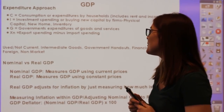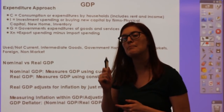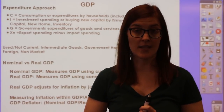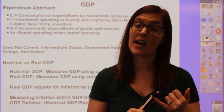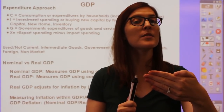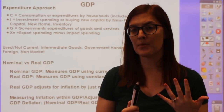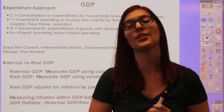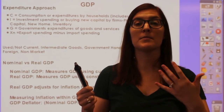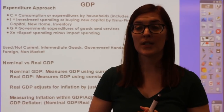G is government. To count in GDP, the government has to be receiving a good or service in return—which means all government handouts do not count. These are also called entitlement programs or transfer payments. Welfare, Social Security, and unemployment compensation are examples of the government giving out money without receiving a good or service in return. What would count is buying a tank or paying a postal worker's salary, since something is received in return.